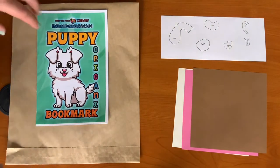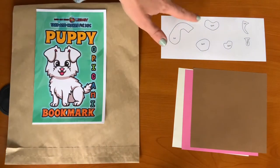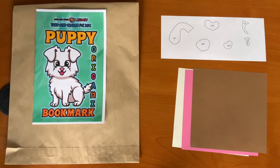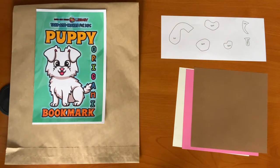In this week's Take and Make kit you should have received instructions, different parts of your dog, and then three different colors of origami paper.